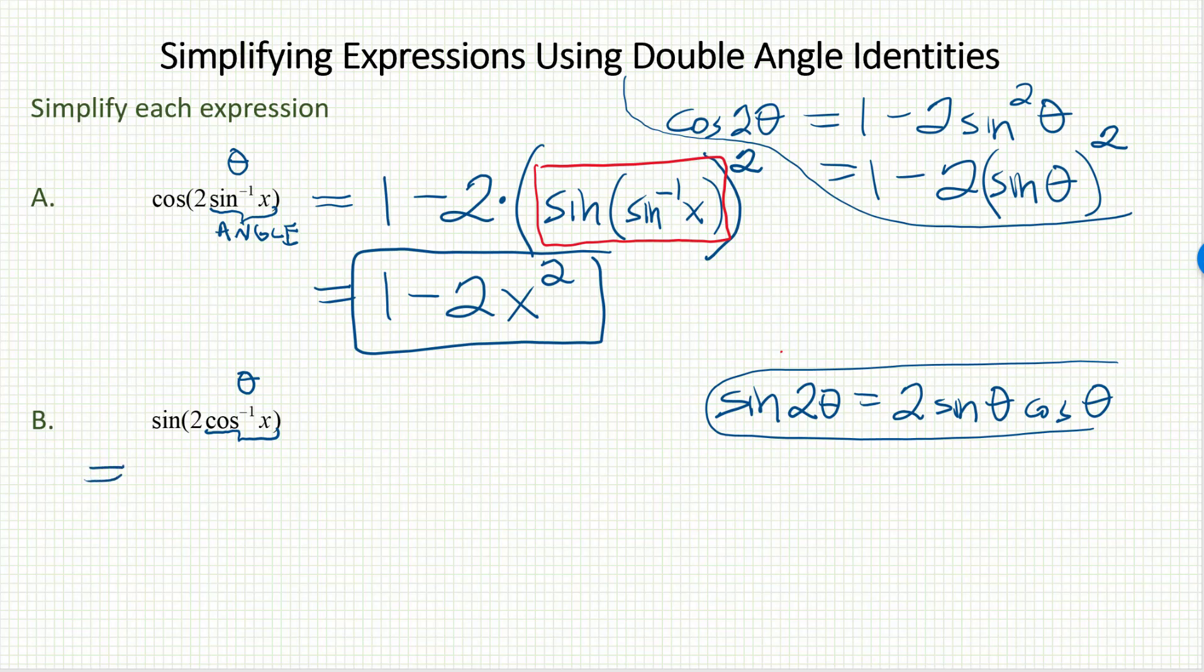Let's go ahead and replace the left side of that identity, which is what I have here, with the right side. So, sine of double angle is equal to 2 times sine angle. My angle is cosine inverse x times cosine angle. Again, my angle is cosine inverse x. So, we've made a substitution. We've simply replaced the left side with the right side of the identity.